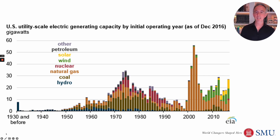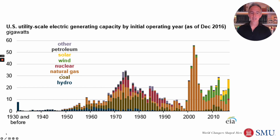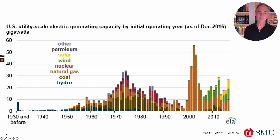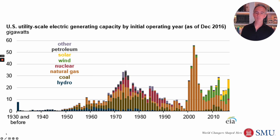Hydro development continues through the 50s and 60s, but then we get other sources. In an ugly brown color, we have coal — a big boom in coal power facilities in the 70s and 80s. In orange, natural gas saw a huge boom in power plants in the 2000s. Nuclear really starts coming on board in the 1970s, with very little added since 1990. Wind and solar appear more recently in green and yellow, and petroleum plants, built mostly in the 1970s, are rarely built now.